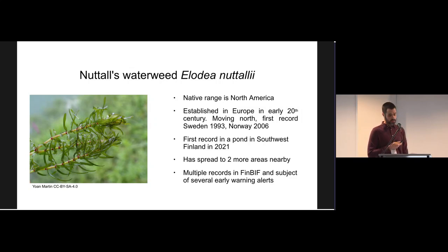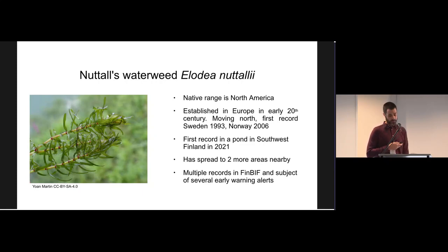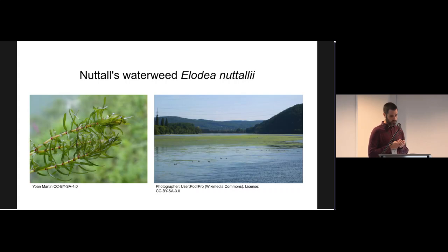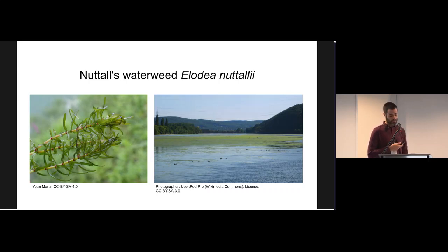To ground this talk in reality, I'll briefly cover some taxa we send alerts for. This aquatic plant is Nuttall's Waterweed. Its native range is North America, but it's now well-established and invasive in Europe. It's been moving north — presumably accelerating under climate change — first recorded in Sweden in 1993, then in Norway in 2006, with the first Finnish record occurring only two years ago in a small pond in the southwest. This species has the potential to do significant ecological damage as it quickly chokes up water bodies. Since the initial incursion, it has spread to two more nearby areas and has been the subject of multiple automated alerts from our system.